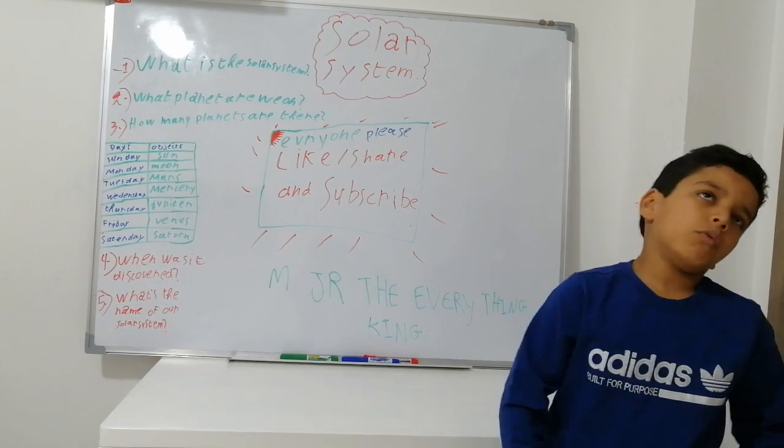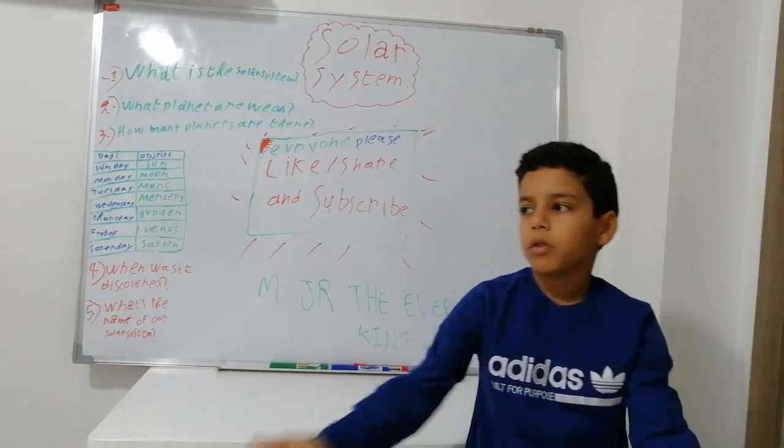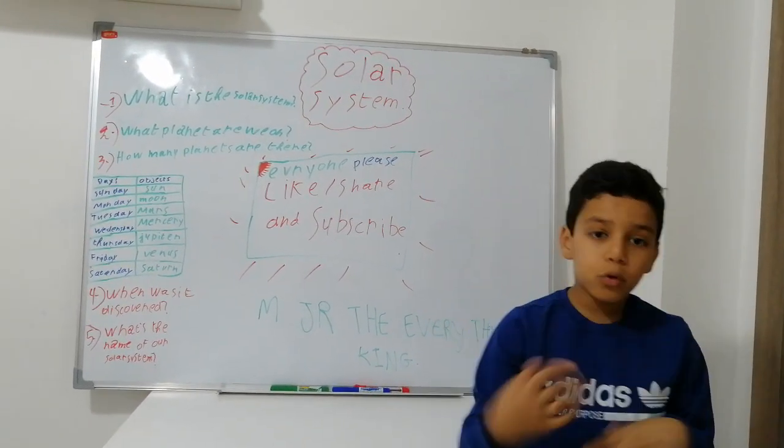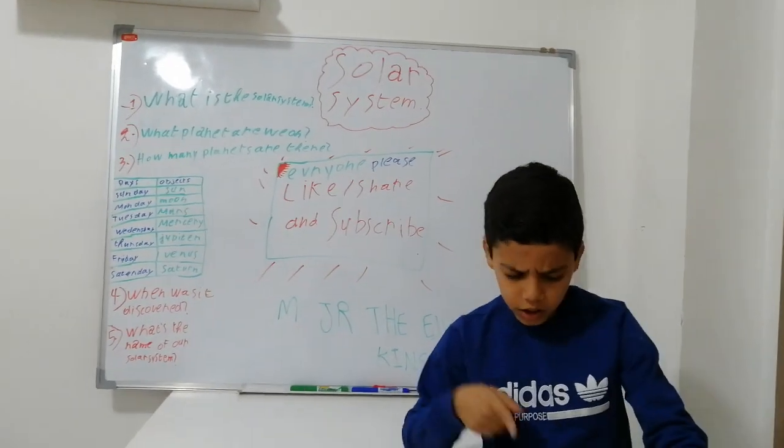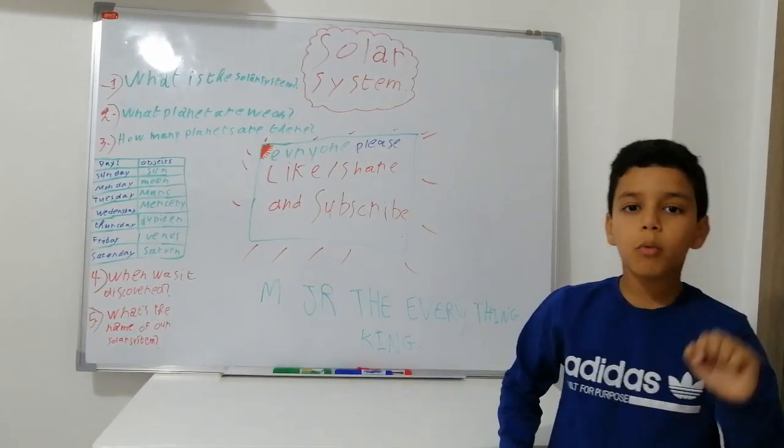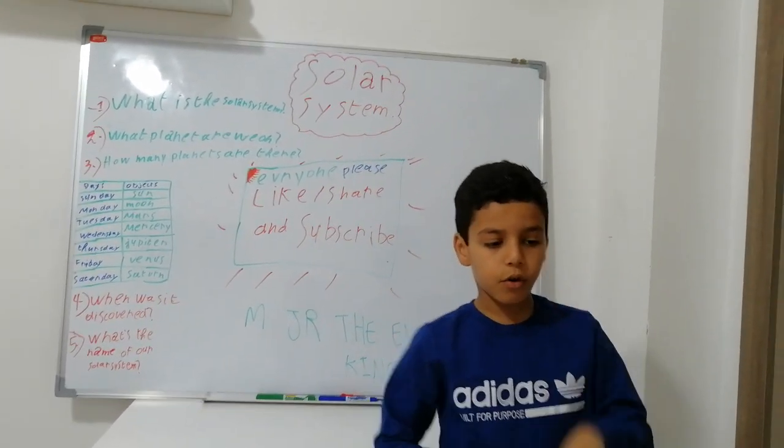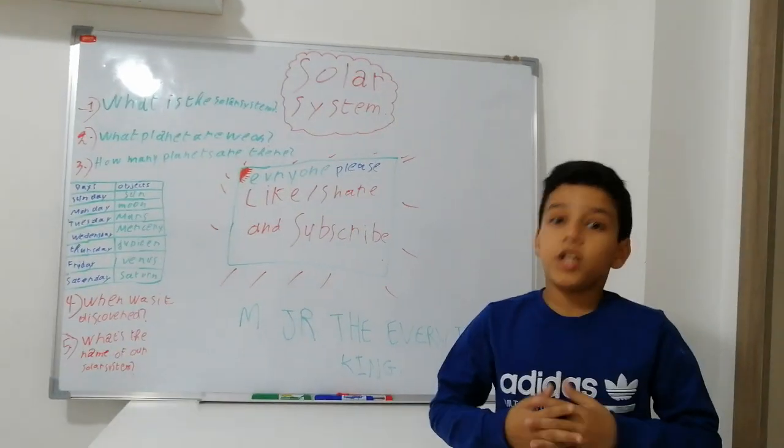When was it discovered? Well, this whole thing about the solar system and everything was in 1781. That was like the year where the solar system was actually a thing.